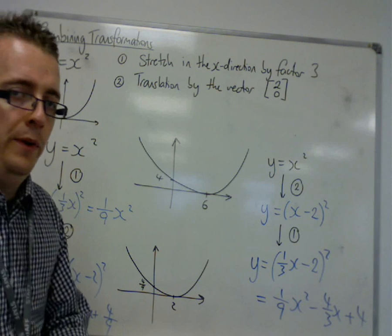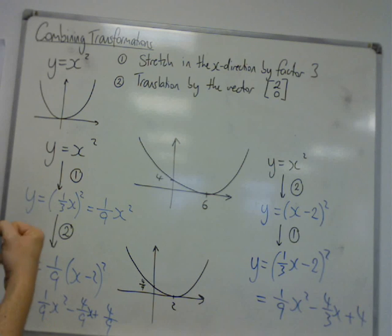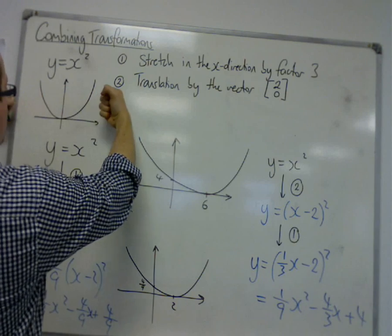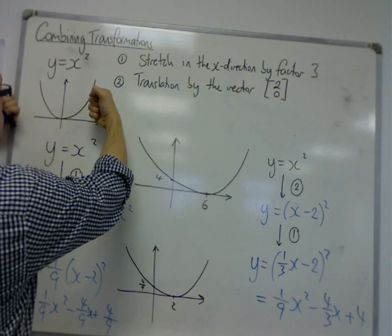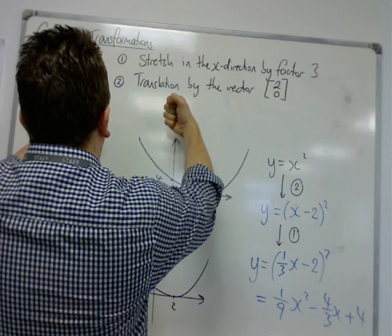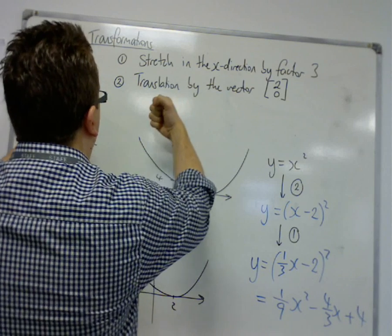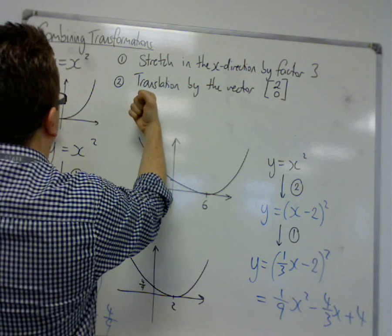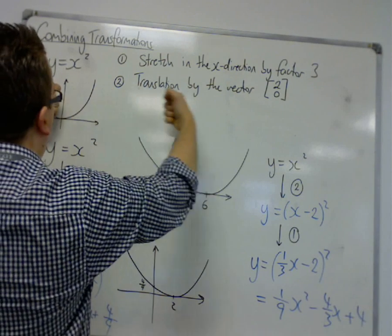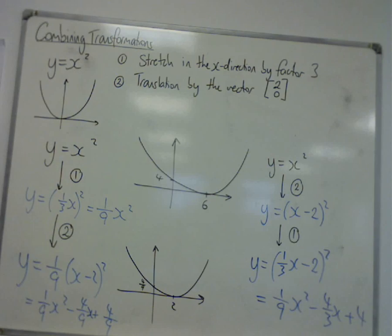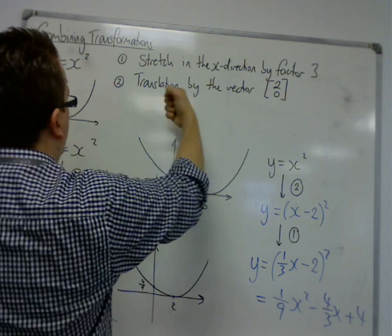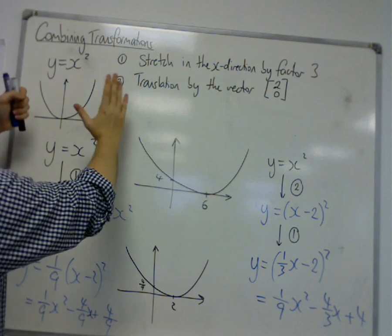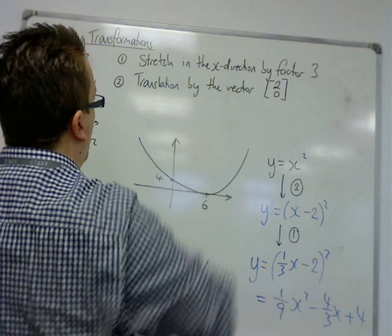So what's happened, and the reason why this order has mattered this time, is because I'm stretching in the x-direction by a factor of 3, and then I'm translating it. That's what happens in the first time. But with the second order, you translate it first and then stretch it. Remember, it stretches away from the y-axis when you're stretching in the x-direction. So if you've already moved along in that direction and you stretch, then it pulls it further away.